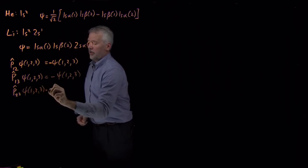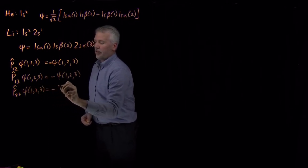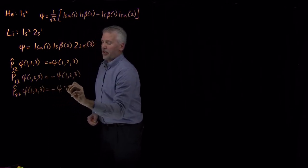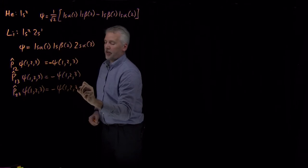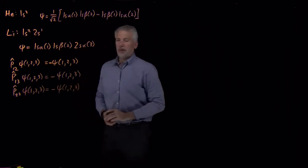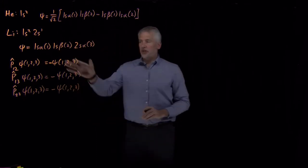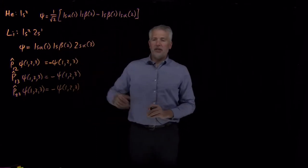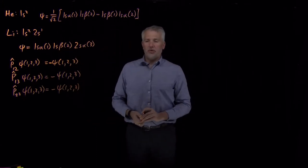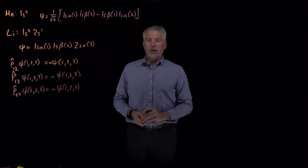There are three different exchanges I need to make sure I'm anti-symmetric with respect to. The function as written isn't anti-symmetric with respect to any of them.